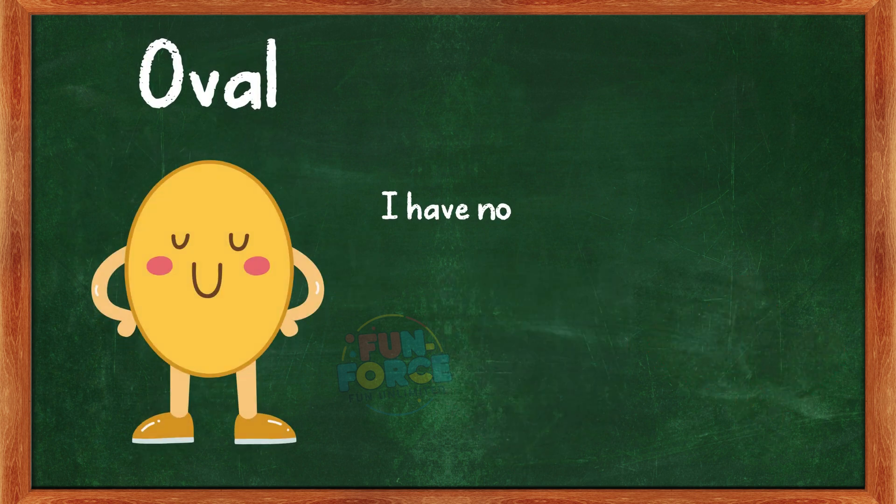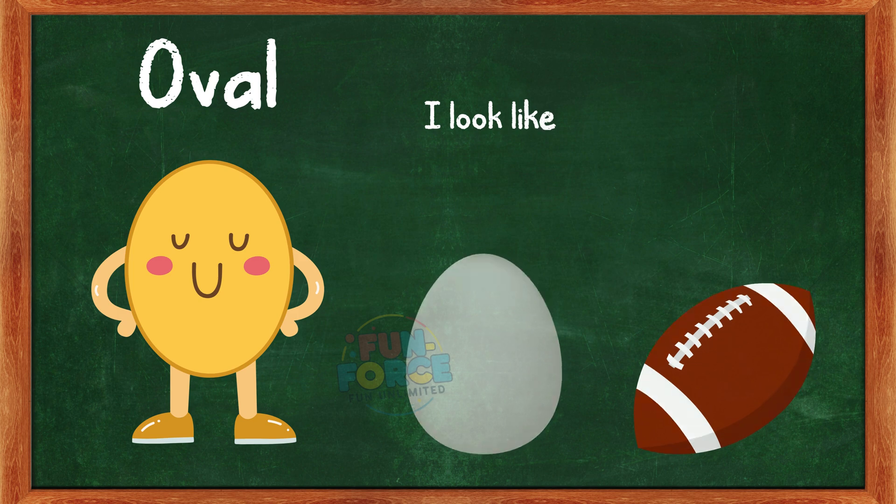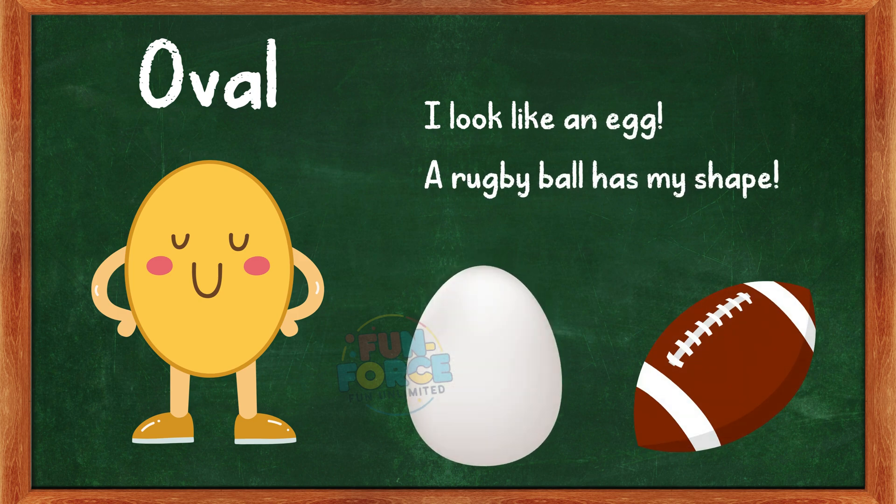I am an oval. I have no corners, and I look like a stretched out circle. Can you guess some objects that are oval shaped? I look like an egg. A rugby ball has my shape.